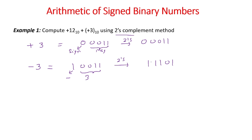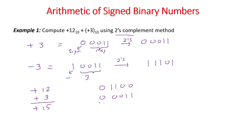Let me solve a few examples based on arithmetic operations of signed binary numbers using two's complement form. First example: plus 12 plus plus 3 — we expect the result to be plus 15. Plus 12 in two's complement form is 0 1 1 0 0, since the two's complement representation of a positive number is the same as its signed magnitude. Similarly, plus 3 will be 0 0 0 1 1. If we add these, the result is 0 1 1 1 1.